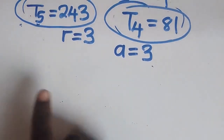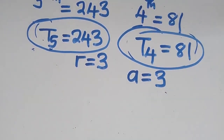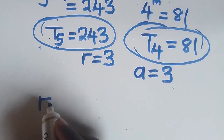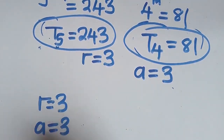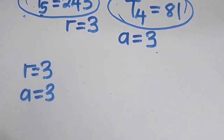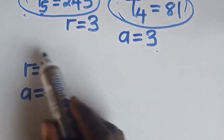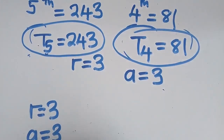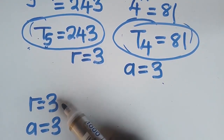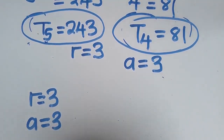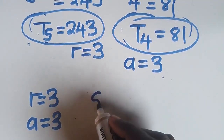This data won't be discarded because it is the data that is going to help us. In a geometric progression, what is important is the common ratio and the first term — these are the only two things needed. Once you have them, you can find the sum of terms, any term, or sum to infinity. So find the sum of the first five terms — write the formula.